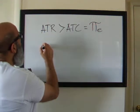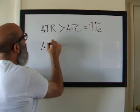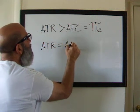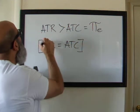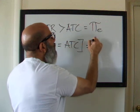We're going to say that anytime the ATR is just equal to the ATC at a certain quantity of production, we're going to say that that's a normal profit.